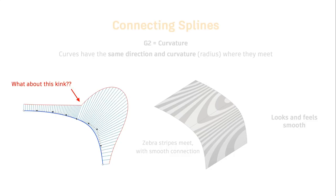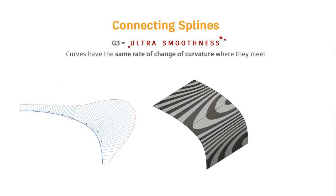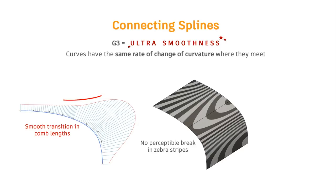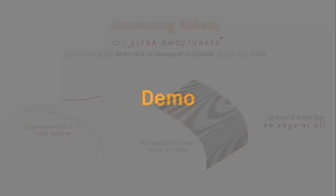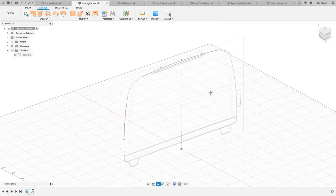That kink in the curvature comb doesn't represent a visual kink in the surface — it's one level deeper, more like a mathematical derivative. It means the curvature suddenly changes at that point. Automotive designers worry about this because they're building big shiny objects where these imperfections are more obvious. G2 is going to be fine for most consumer product design. But if you want to be a master at this, you can go for G3 — what I'm calling 'ultra smooth.' The technical definition is that not only is the curvature the same at that point, but the rate of change of curvature is also the same. If you get that red line smooth or nearly smooth, that results in a G3 connection — no perceptible break, the zebra stripes flow as if it were a single connected surface.